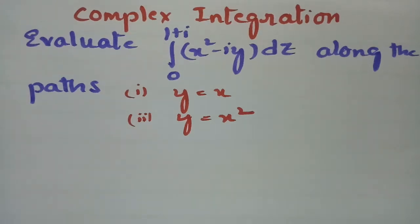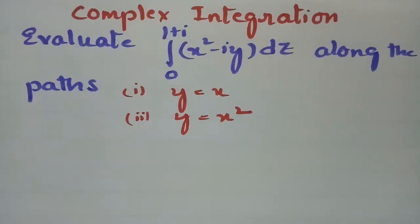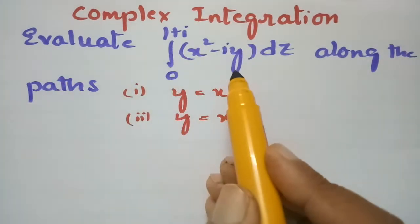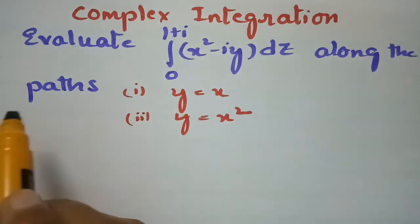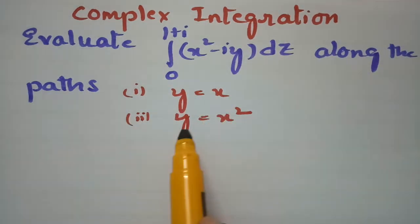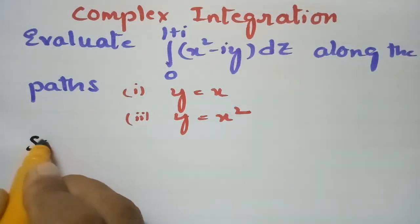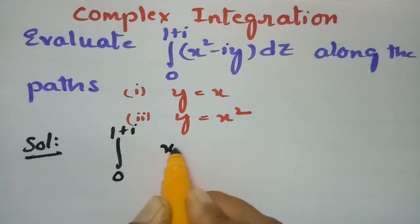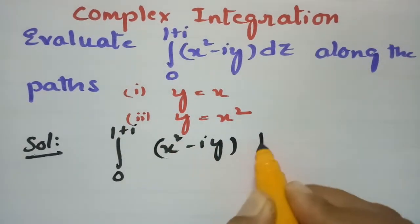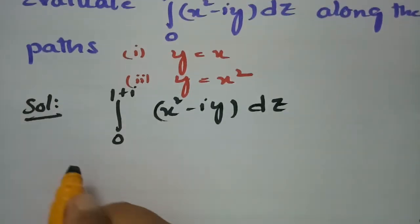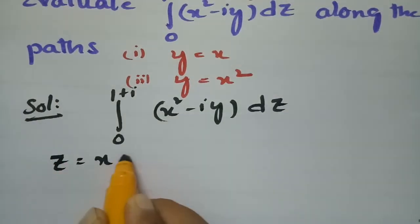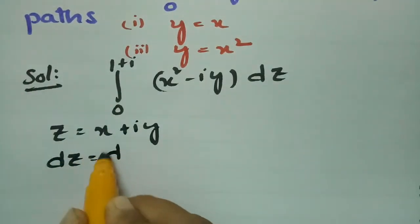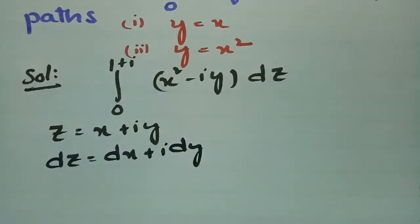In today's video I am going to evaluate a problem from complex integration. We have to evaluate the integral from 0 to 1+i of (x² - iy) dz along the paths y = x and y = x². As you know, z = x + iy and dz = dx + i·dy.